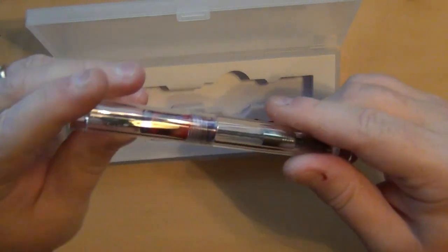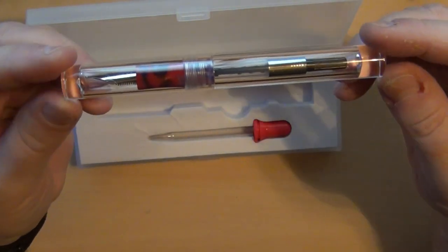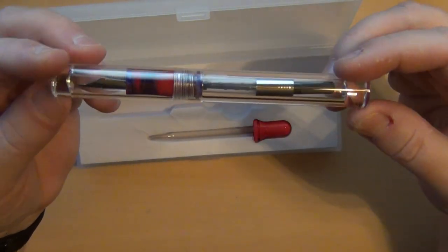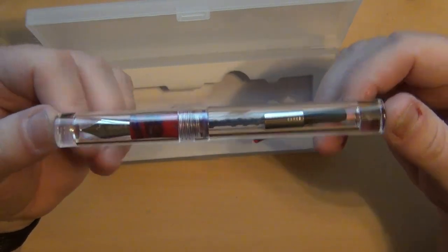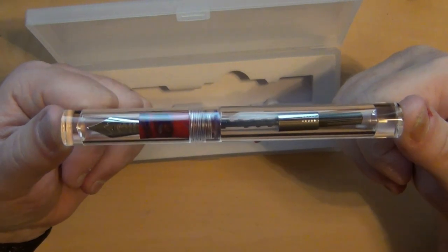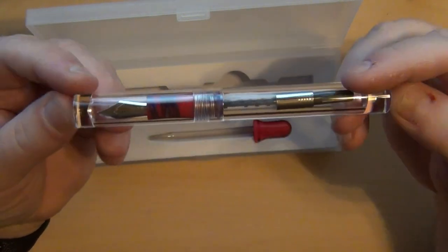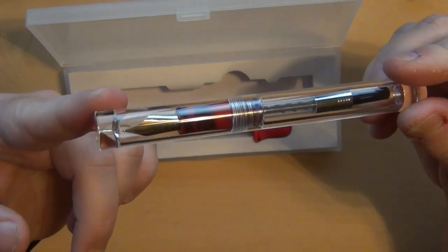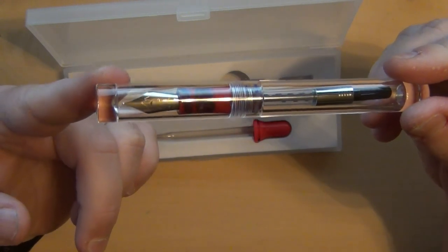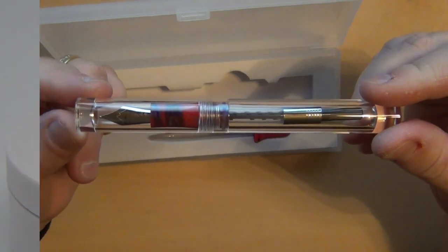The Moonman C1. First impressions. I like the way it looks. I like the way it holds. I like the idea it can be eyedroppered. I like the clear acrylic. I'm actually a fan of demonstrator pens. I'm not a fan of the fact I can only find this in a fine nib. I don't know how it writes yet. You and I will find out together here very shortly.